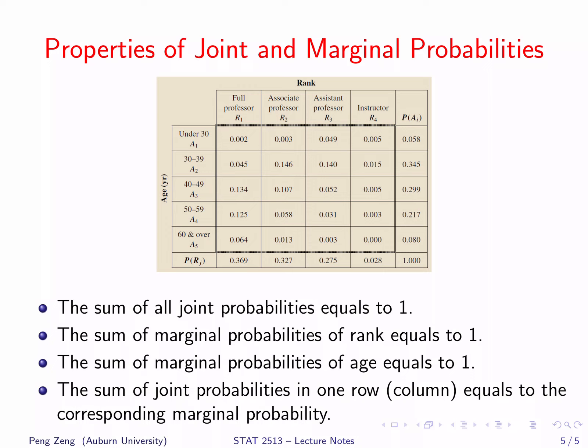We have demonstrated how to calculate marginal probabilities and joint probabilities for all possible scenarios in the contingency table. Compared with the previous contingency table, it is essentially a relative frequency table. Each number is obtained by dividing the corresponding frequency by 1164, the total number of faculty members.